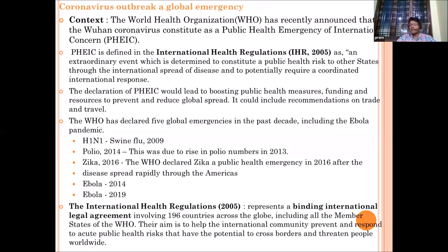The impacts of declaring a Public Health Emergency include more awareness, better public health measures, improved funding for health infrastructure, early vaccine research, and countries imposing trade and travel restrictions. WHO has declared diseases as global emergencies six times so far: swine flu in 2009, polio in 2014, Ebola in 2014, Zika virus in 2016, Ebola resurgence in 2019, and now coronavirus as the sixth. Once declared, countries can act much earlier, like India announcing an international travel ban from around February 20.